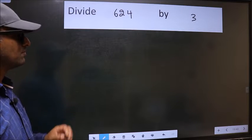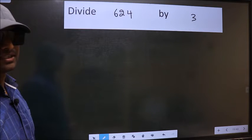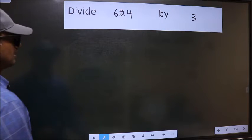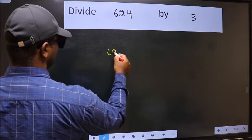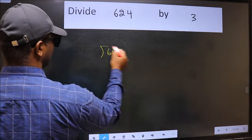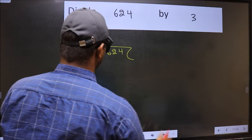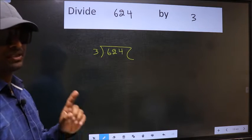Divide 624 by 3. To do this division, we should frame it in this way. 624 and 3 here. This is your step 1.